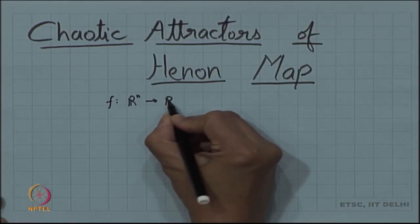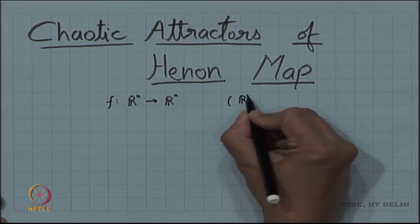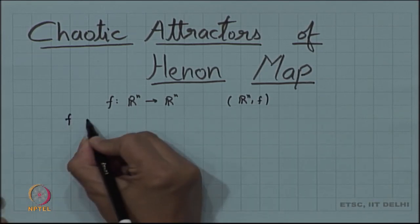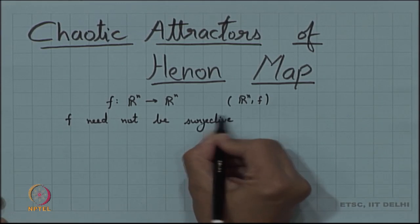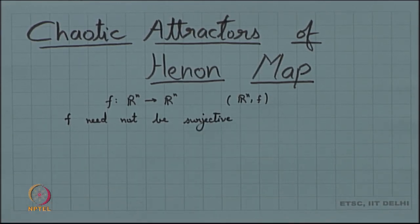What are chaotic attractors? Consider a system f, a map from R^n to R^n. We are looking into the system, where f need not be surjective. We are interested in the orbits of the system. Generally, most of the orbits escape to infinity, because the one-point compactification makes infinity an attracting fixed point, so some orbits escape.